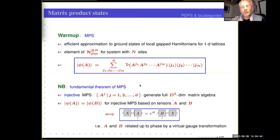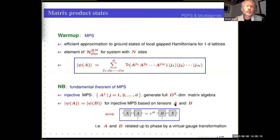We call an MPS injective if the matrices A_j for all values of j, upon linear combination and forming products, give you the full D-squared-dimensional matrix algebra. The fundamental theorem of MPS states that if you have two such injective MPS tensors A and B, then the two states that I get are equal if and only if the matrices A and B are related by conjugation by a matrix X, up to possibly a phase.